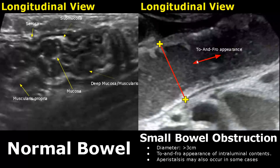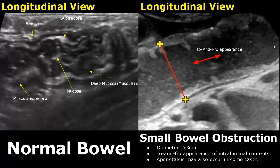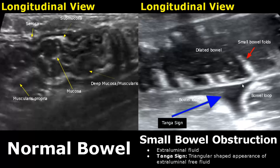Another feature of obstruction is the to-and-fro appearance of intraluminal contents. In the live video, you will see these contents moving back and forth inside the bowel in bowel obstruction. Absence of peristaltic movements may also be seen in some cases.